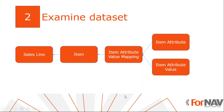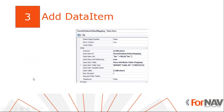Going back to our PowerPoint slide, in our dataset we have a sales line which is connected to an item. An item has a connection to the item attribute value mapping table, and the item attribute value mapping table has a relation to the item attribute and the item attribute values. So the first thing we need to do is set a connection to the item attribute value mapping, and the second thing is to get the item attributes and item attribute value tables.